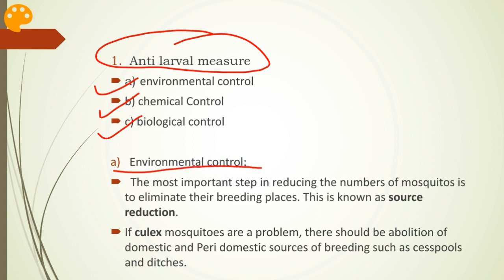Coming to environmental control: the most important step in reducing the numbers of mosquitoes is to eliminate their breeding places. If breeding places are not there, the problem of mosquitoes will be over. This method is known as the source reduction technique, which comprises minor engineering methods such as filling, leveling, and drainage of breeding places. Some water management techniques have also been utilized, such as intermittent irrigation, so that water doesn't stay in the fields for a longer duration of time.